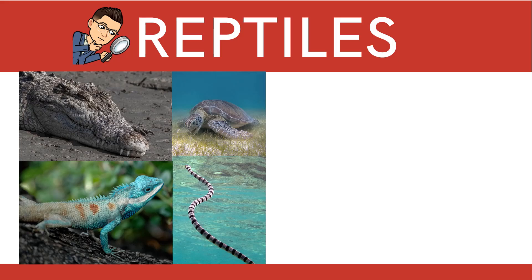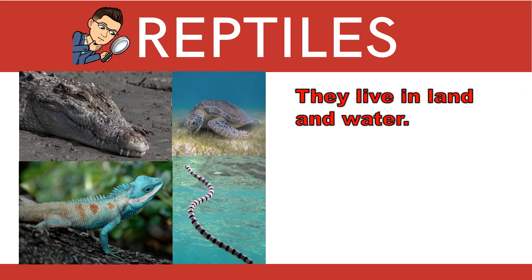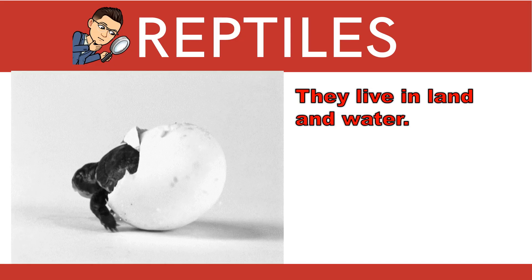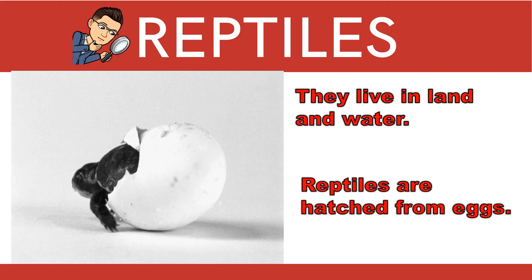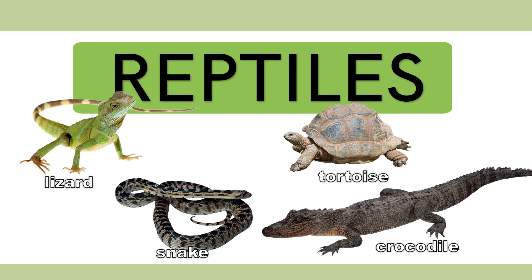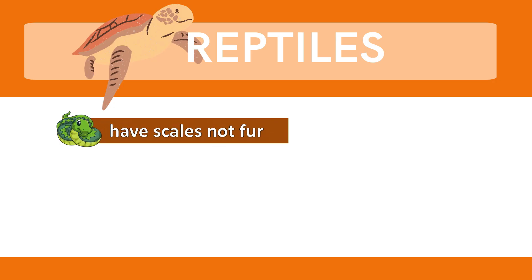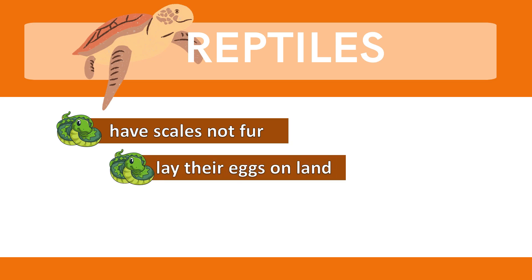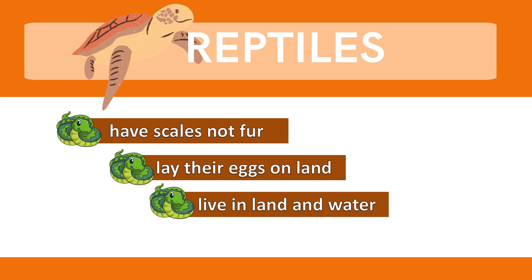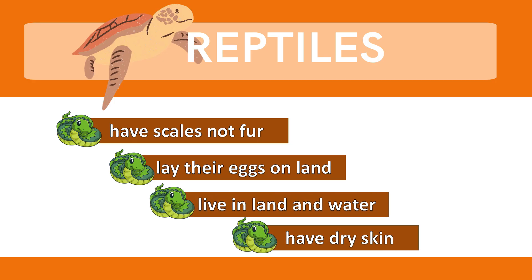Based on the pictures, class, where do reptiles live? Reptiles live on land and in water. How about this picture — what can you observe? They come from eggs. Reptiles are hatched from eggs. Examples of reptiles are lizard, snake, tortoise, and crocodile. The characteristics of reptiles are: reptiles have scales, not fur; reptiles lay their eggs on land; reptiles live on land and in water; reptiles have dry skin.